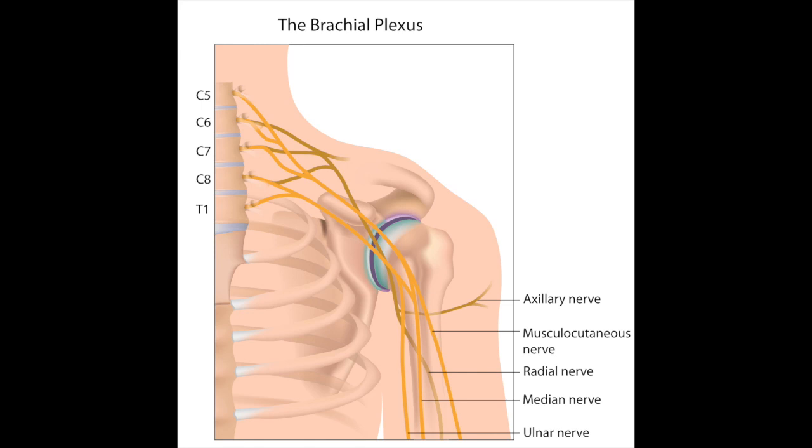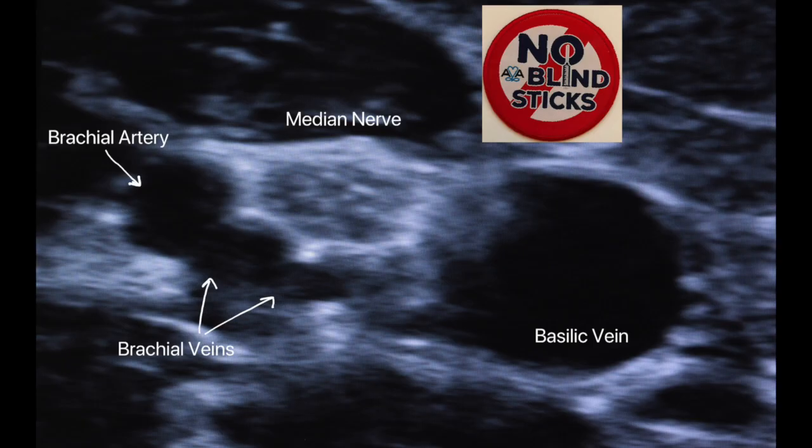We're going to talk about the nerves of the upper extremities. This is such an important topic. The nerves we're going to cover are the median nerve, the ulnar nerve, and the radial nerve.